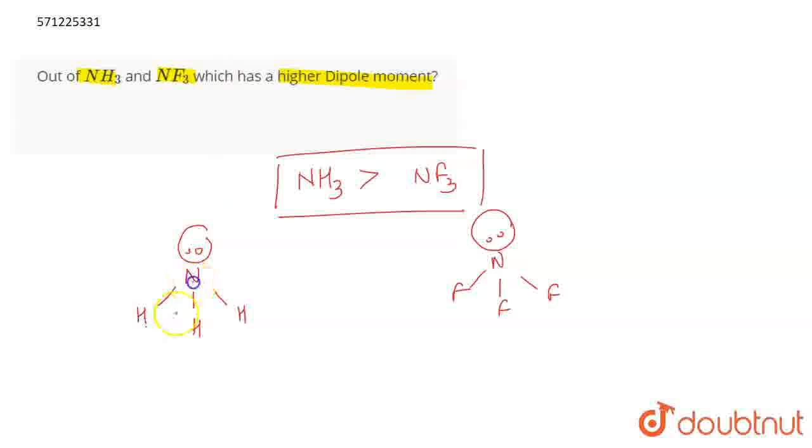Now, dipole moment goes in the direction of the electronegative atom. If we talk about hydrogen and nitrogen, then nitrogen is more electronegative. So the direction of dipole moment will be towards nitrogen, similarly for this hydrogen and similarly for this hydrogen as well. Now, the direction of the dipole moment of lone pair is in the upward direction.